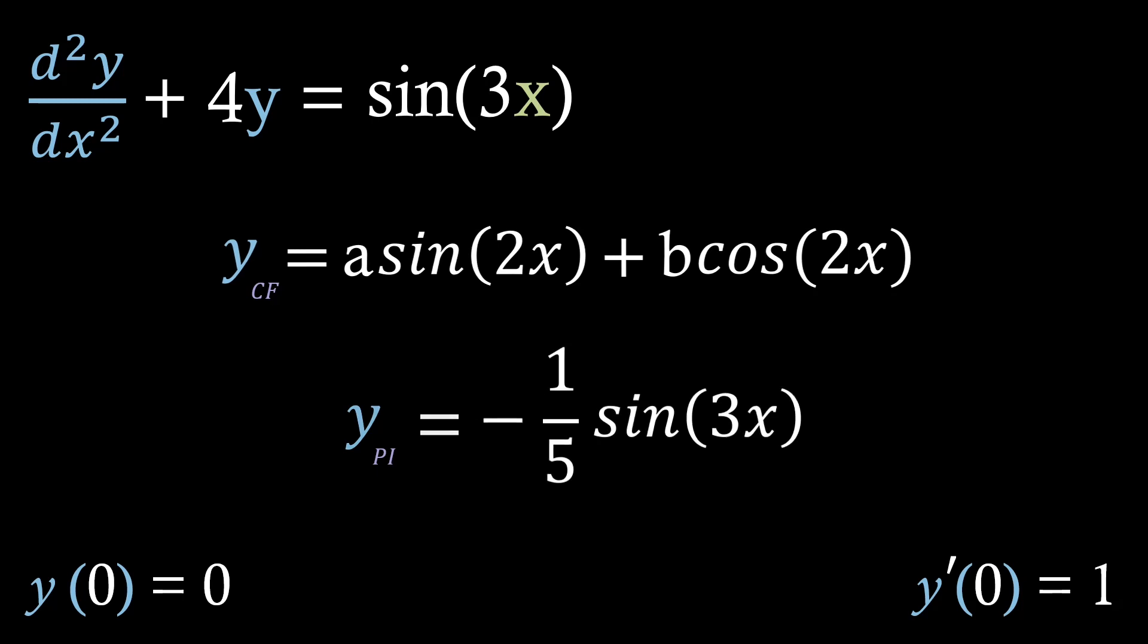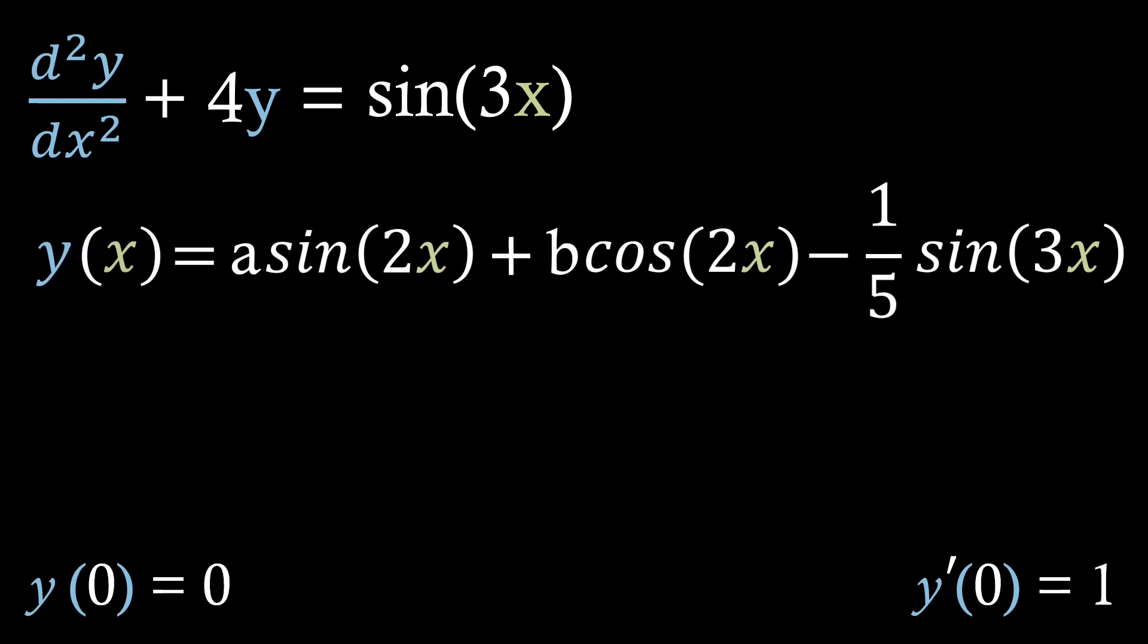Just as we did before using this method, we just combine our two sets of solutions, the ycf and the ypi functions, to get this general solution of y. Now with both initial value problems and boundary value problems, what we're trying to do is find a particular solution for these a and b constants in our general solution.